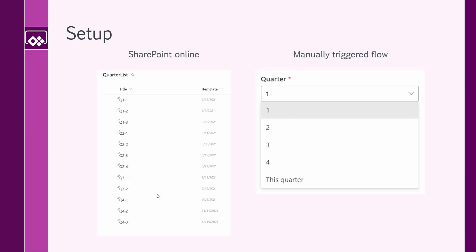On SharePoint Online, I created a list called Quarter List. Inside it, I have a field called Title and Item Date. The titles are just dummy titles — Q11, Q12, Q13 — and as you can see, for every quarter, the item in the list has a date that matches the Q index. So anything starting with Q1 belongs to quarter one, Q2 to quarter two, and so on.